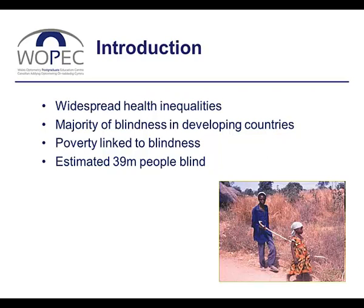Being blind and poor leads to exclusion from basic health, education and social services, and exposure to isolation, ill health and economic disadvantage. It's been shown that once blindness is relieved, the opportunities for work are increased and dependence on other family members is reduced.